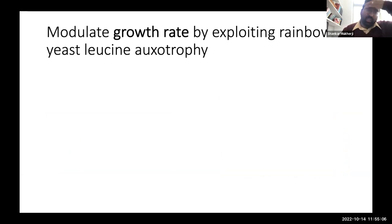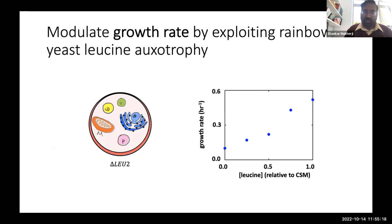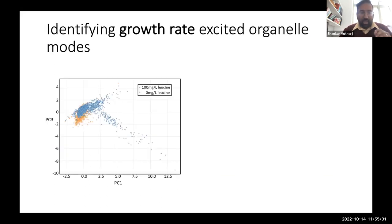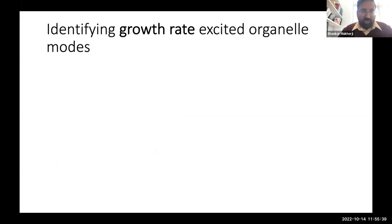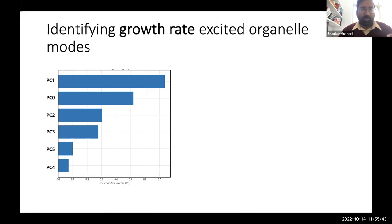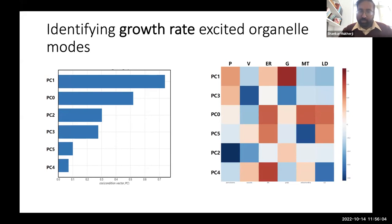For growth rate, we built rainbow yeast to be auxotrophic for the amino acid leucine, so because these cells can't make their own leucine we can tune the growth rate by supplying varying amounts of leucine. We run the same PCA trick: cells with a lot of leucine versus no leucine, construct a condition vector, and see a hierarchy of directions. In this leucine case we see the other mode popping up — the prioritized mode where Golgi and peroxisomes are slightly prioritized and the other organelles take the hit. So growth rate and cell size individually excite those modes we saw from glucose.